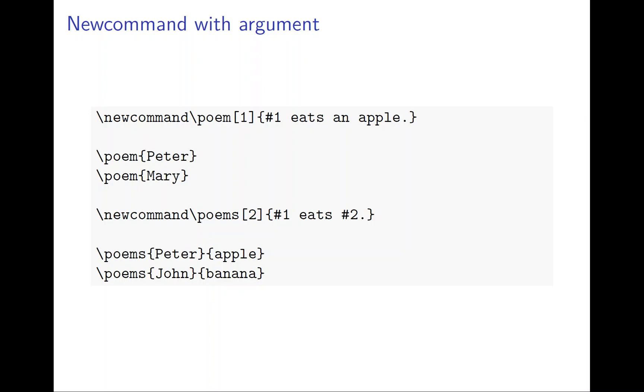It's more like a function because it depends on the input rather than being a constant. So here we have newcommand \poem[1]. The [1] means there's one variable.